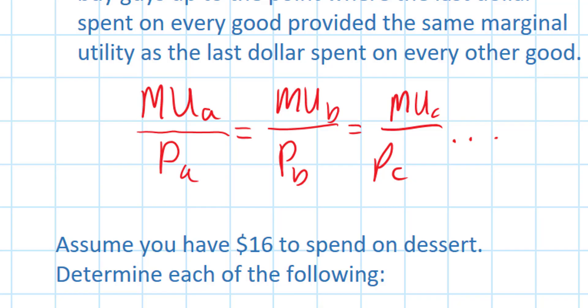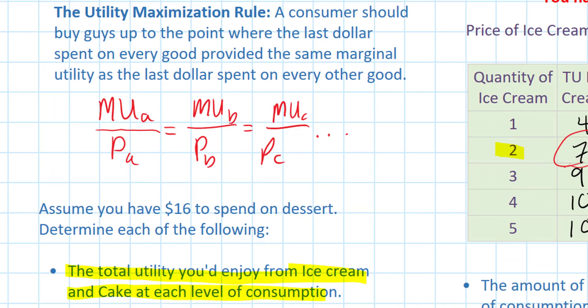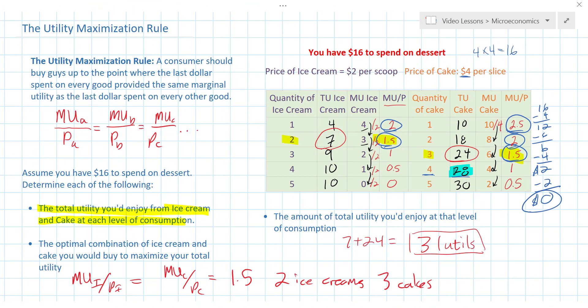Now of course, this is a very esoteric way to analyze consumer behavior. In the real world, we don't always make decisions based on mathematics, but we do go to stores and shopping centers where we can buy things and spend our money, and we make these subconscious choices — we're always trying to get the most bang for our buck.